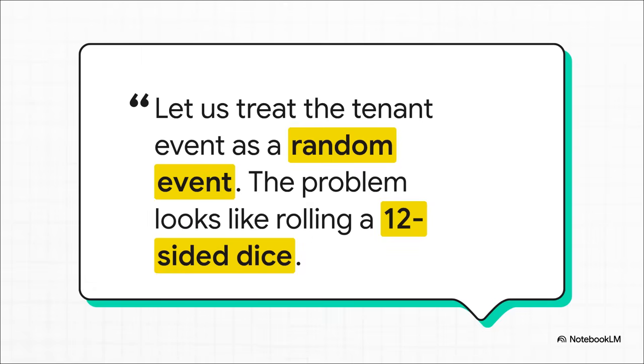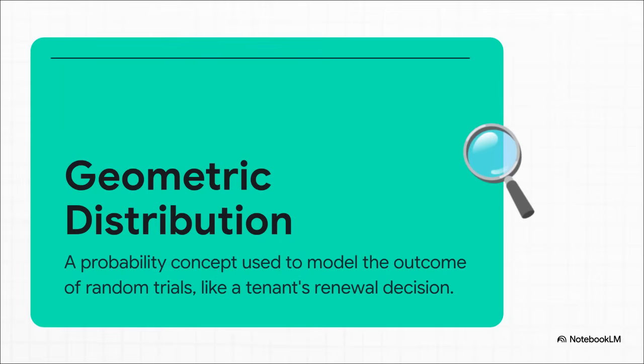The next move belongs entirely to the tenant. Are they going to renew for another 12 months? Or maybe a shorter term? Are they going to go month to month? Or just leave? Their decision is, for all intents and purposes, a random event. Trying to predict it is like rolling a 12-sided die and just hoping it lands on January. And look, this isn't just a gut feeling.